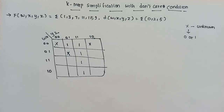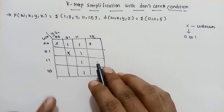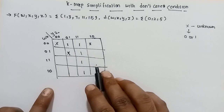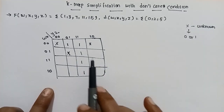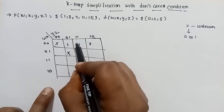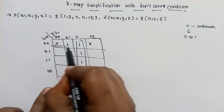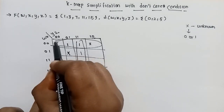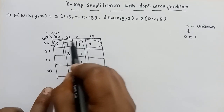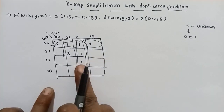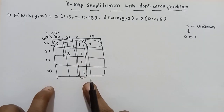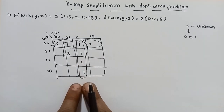We have to group the maximum number of squares — 16 squares. Next to 8. We have to check the number of squares. Let's group number greater than 4. Next to 4. So there are three or four groups, so we have to minimize the Boolean expression.